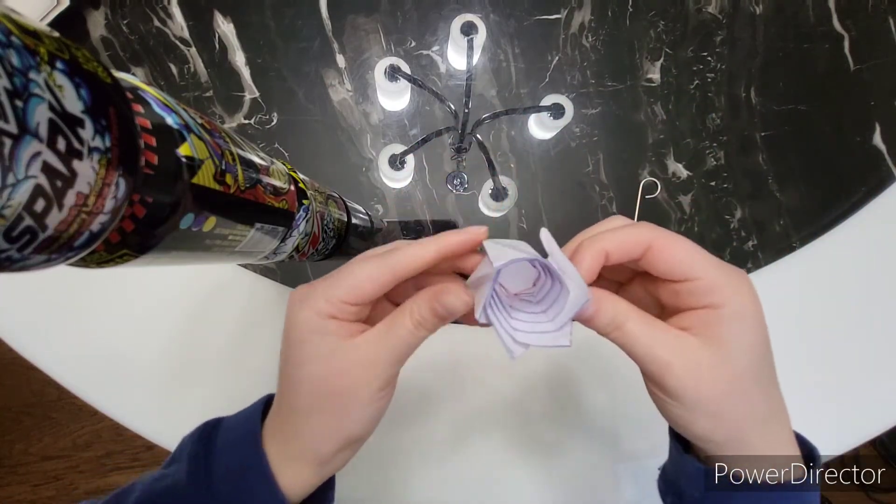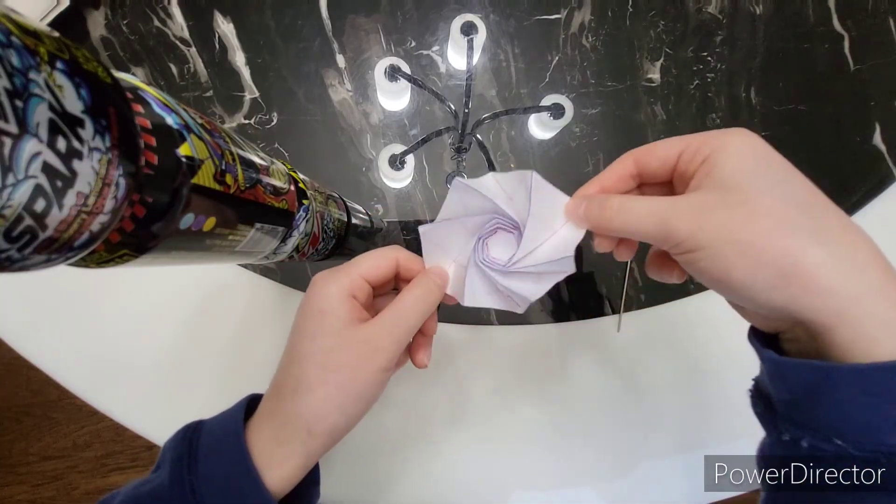Now, if you pull on the opposite sides, they should be able to expand and compact.